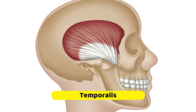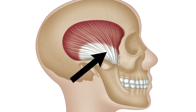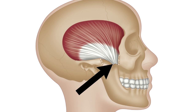The temporalis muscle has a broad attachment here on the side of the skull. You can see that the muscle itself is a good-sized muscle, even though it's flat. It then becomes a tendon, tucks under the zygomatic arch — which is your cheekbone — and you can see it's been cut here so you can see the muscle more clearly.